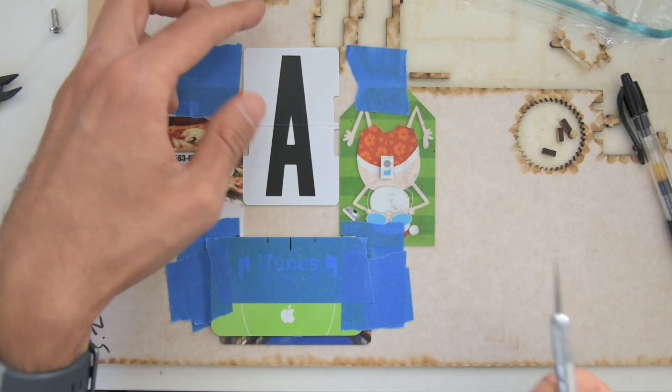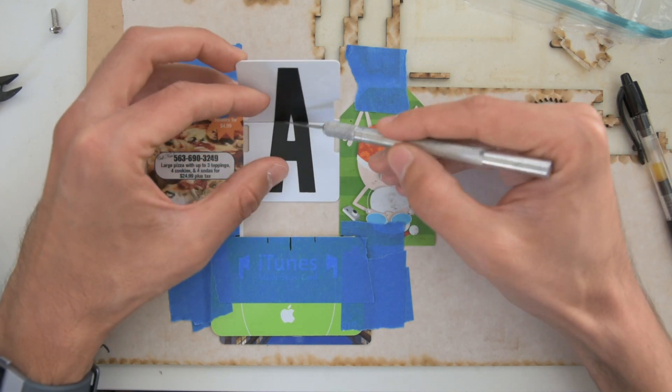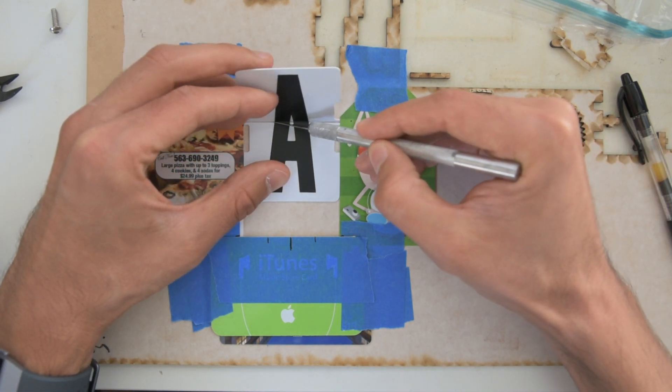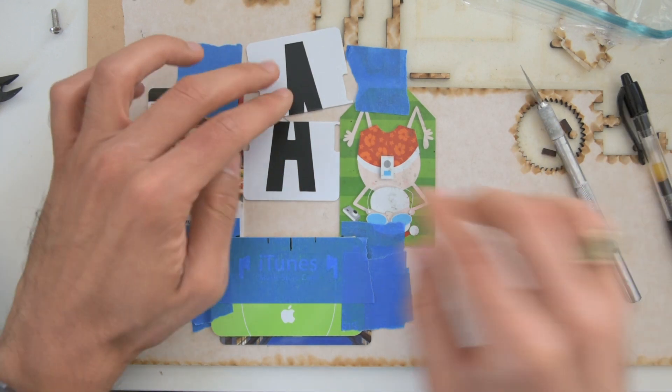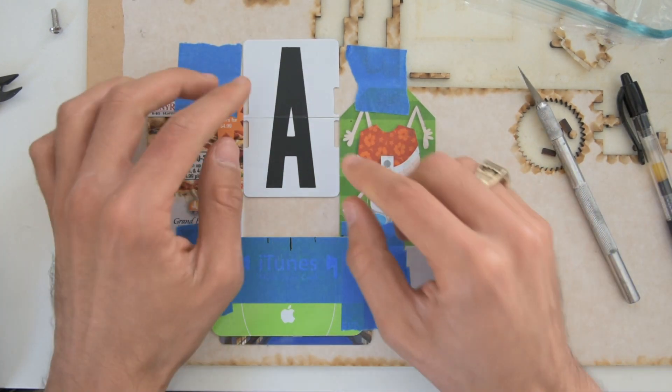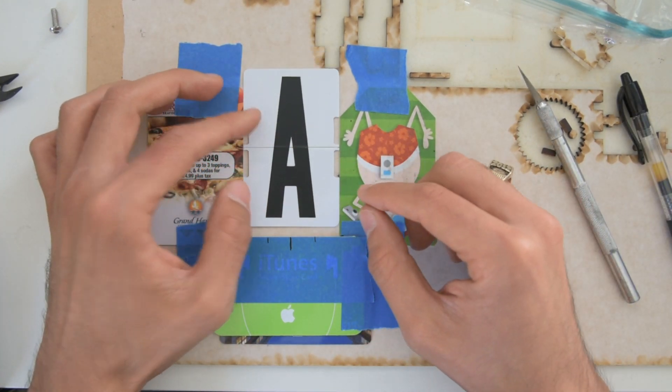And so the final step is to just take our knife and fold this up a bit. And we can just go ahead and cut along the crease. And there we go, we have a letter applied to the flaps.